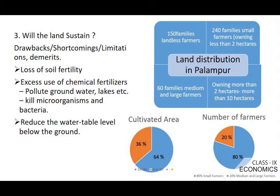The remaining 60 families are medium and large farmers, owning more than 2 hectares or even more than 5 or 10 hectares. Looking at a pie chart for Palampur, 64% of cultivated area is owned by just 20% of farmers — the rich farmers — while 36% of cultivated area is owned by 80% of farmers. Such a stark contrast regarding the ownership of land.